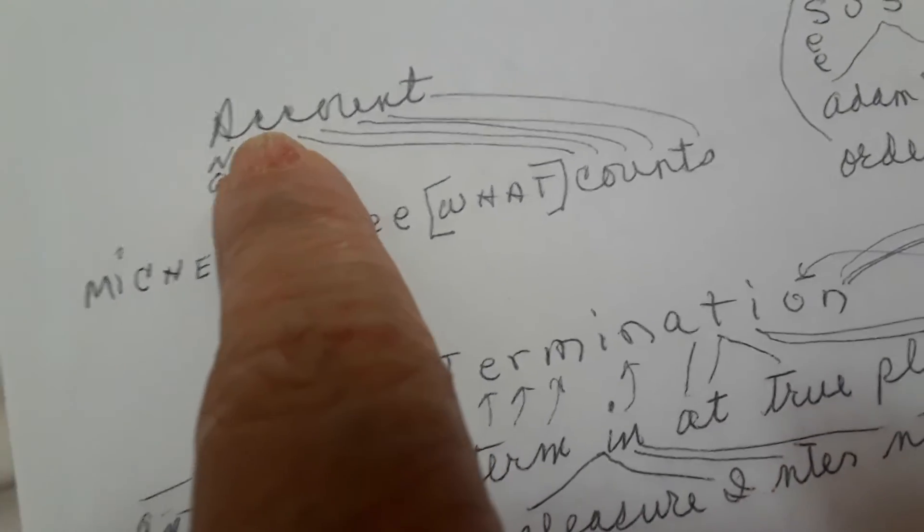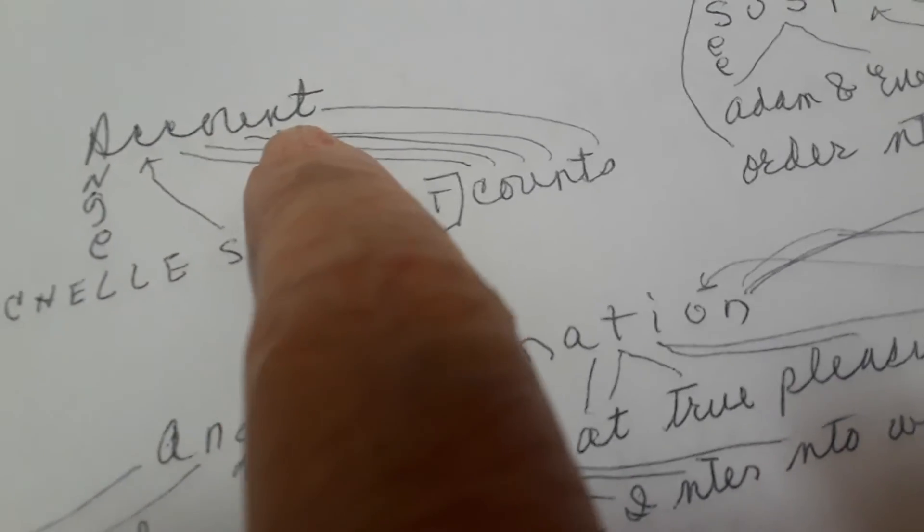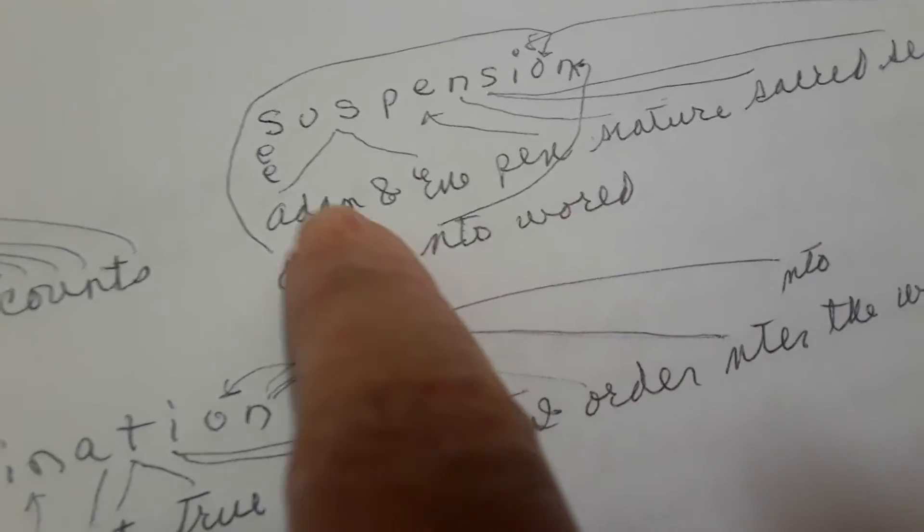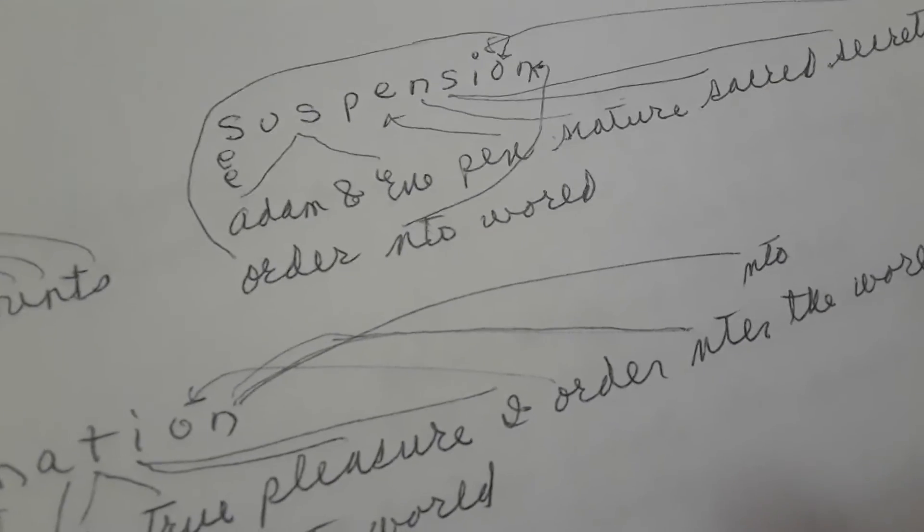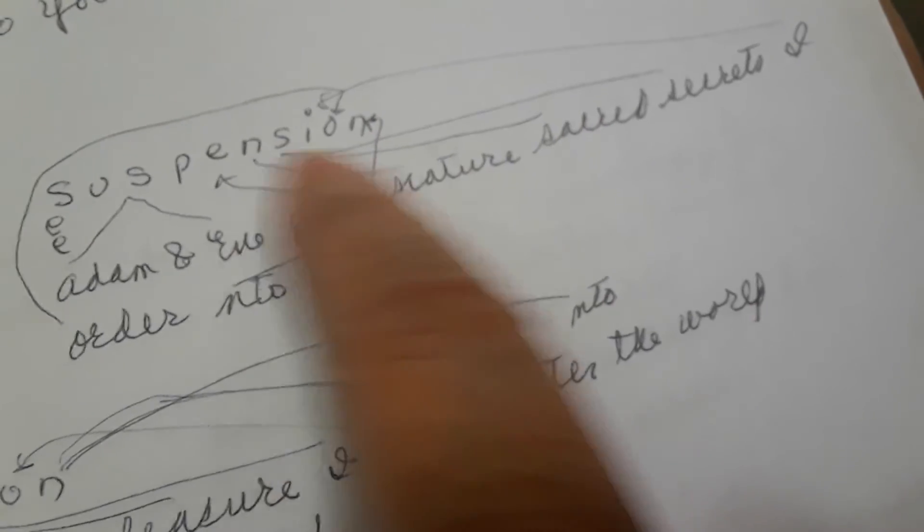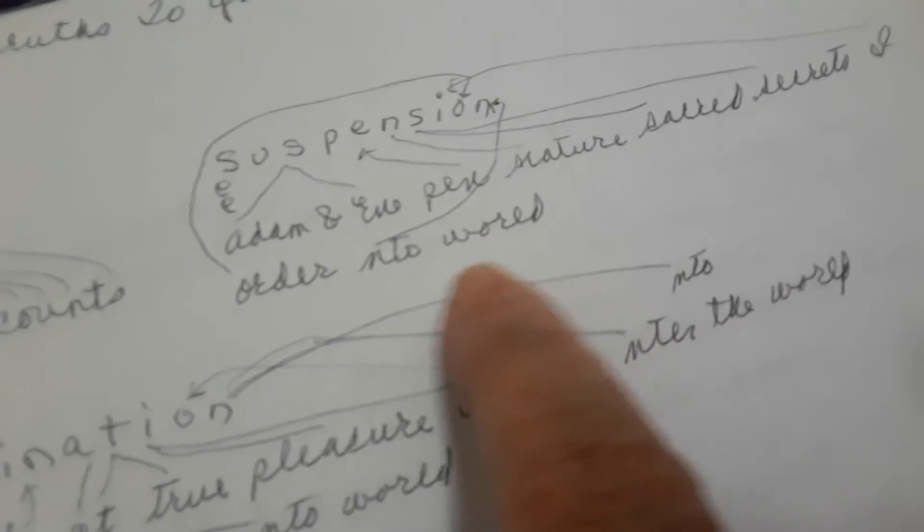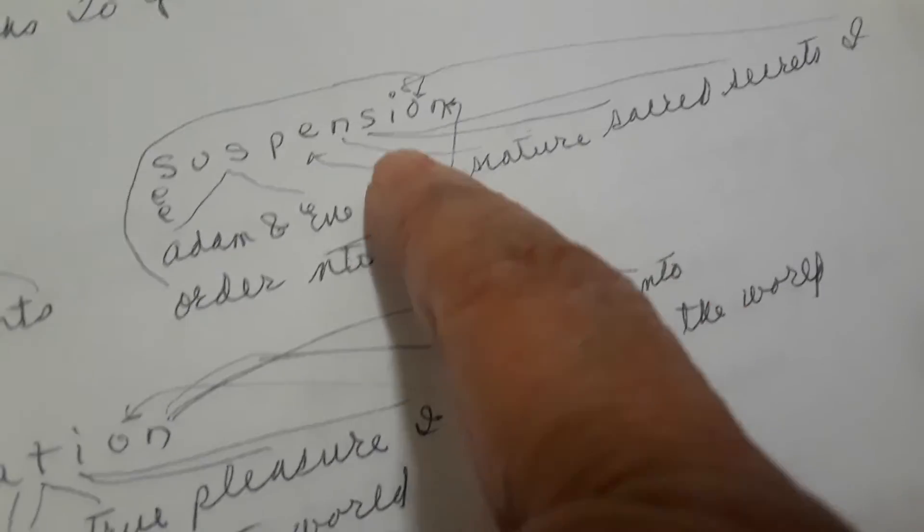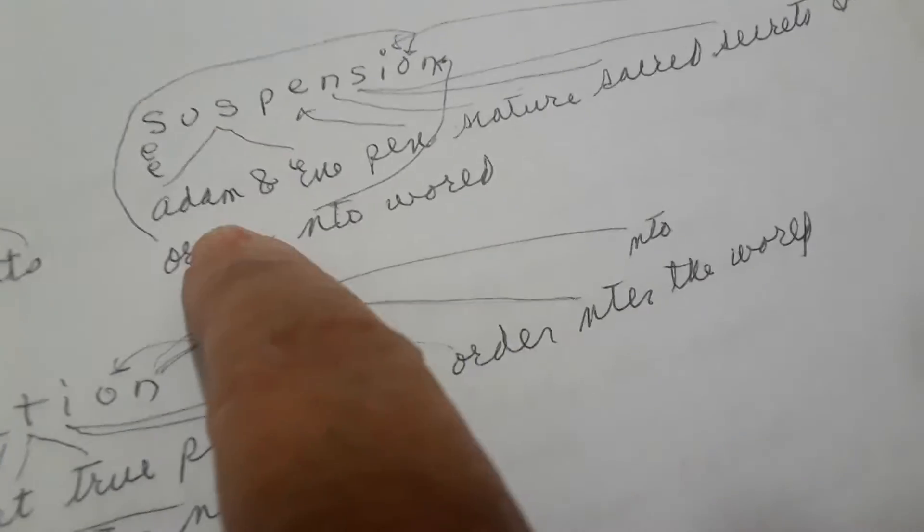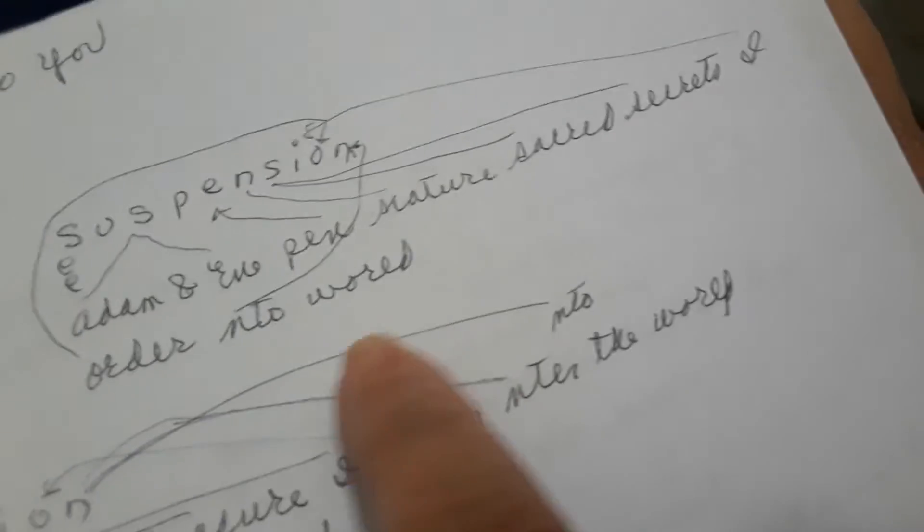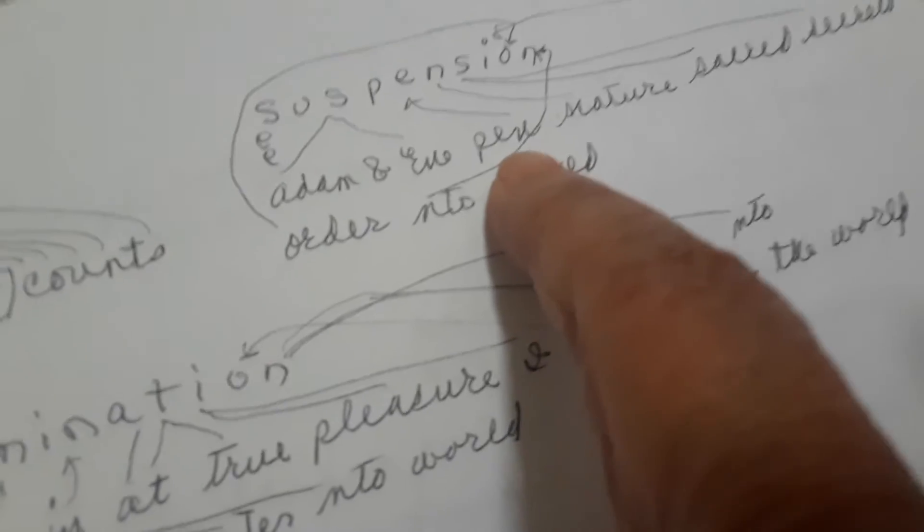Account. Angel Michelle sees what counts. Suspension. Us is Adam and Eve. Pen, N for nature, S for sacred, S for secrets, I for I, O for order, N for into world. See Adam and Eve's pen. Nature's sacred secrets I'll order into the world. Okay, I'll order nature's sacred secrets into the world with my pen. I am Eve. Got it?